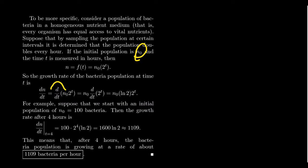And so, for example, suppose we start with an initial bacteria population of 100. Then what would be the growth rate after four hours? We want to compute the derivative at T equals four. Well, based upon the formula, N zero was equal to 100, so we plug that in there. T equals four, so we plug that in there. T to the fourth would be 16. 16 times 100 is 1600. So we take 1600 times the natural log of two. That's approximately 1109.